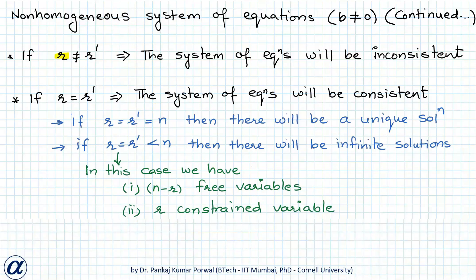If r equals r' and both are less than n, there are infinitely many solutions with n minus r free variables. The free variables can take arbitrary values, while the r constrained variables must be solved in terms of the constants and these free variables.